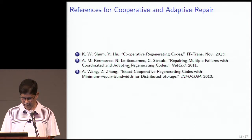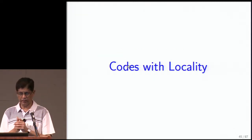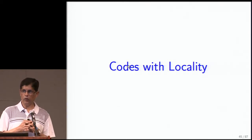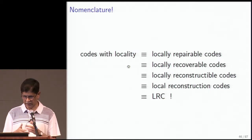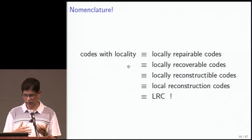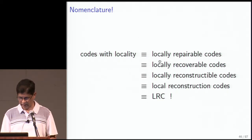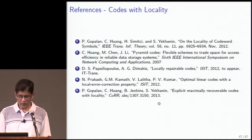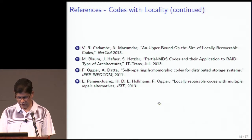I'll put up the slides later for anyone who'd like to look at the references. That concludes the first class of codes — regenerating codes. The second class is a different direction: codes with locality. These codes go by many names — locally repairable codes, codes with locality, locally recoverable codes, locally reconstructable codes, local reconstruction codes — but they share the common acronym LRC.